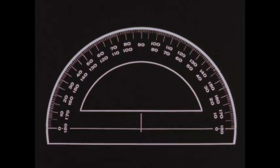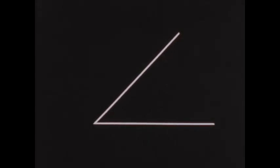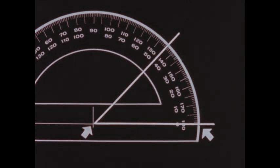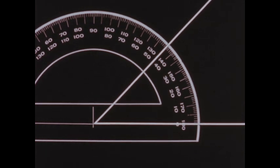The protractor is marked off in degrees in two directions, so that angles lying in either direction can be measured. Let's measure an angle we saw before. The center of the protractor, marked by a small line segment, is placed on the vertex of the angle, with the zero degree mark lying on one ray of the angle. Angles lying in this position are measured by using the inner scale. The second ray, extending through the scale on the protractor, goes through the point marked 45 degrees. We can see that the size of an angle does not change by altering the lengths of the sides.